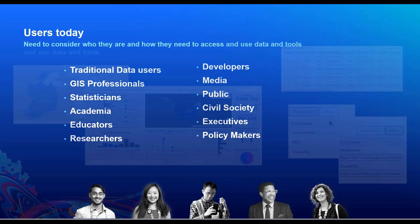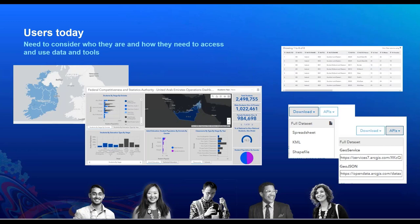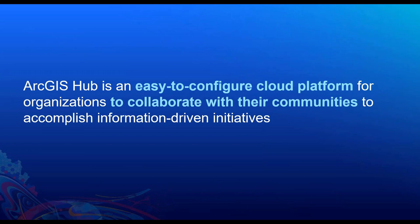Each of these types of users have very different needs. A statistician may want to access tabular data. A researcher may want to explore using open data to find specific information. Developers want an API to build data into an application. The media and general public may find a story map is the best way to communicate with them. Executives might prefer a dashboard or a targeted report. So today, we want to engage with more people, more decision makers, and reach that broad community in new ways.